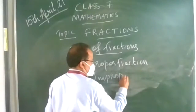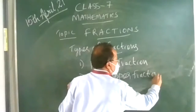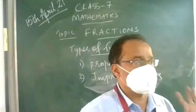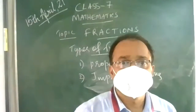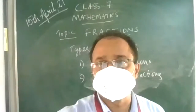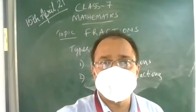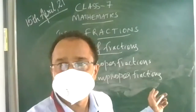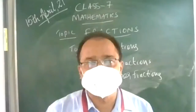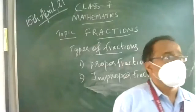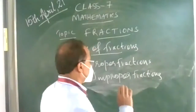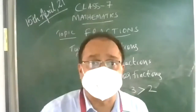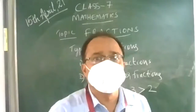The second kind of fractions is improper fractions. It is just the opposite of proper fractions. If the numerator is bigger than the denominator, those are called improper fractions. The value of an improper fraction is always greater than 1.